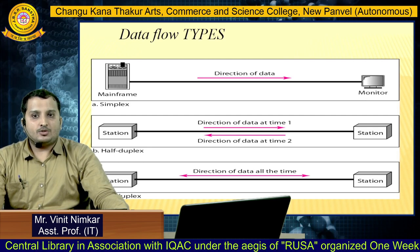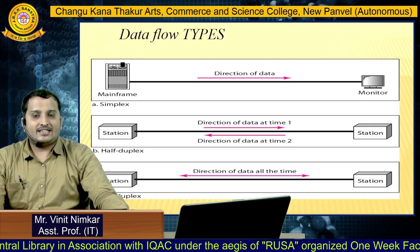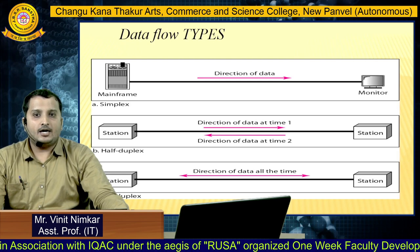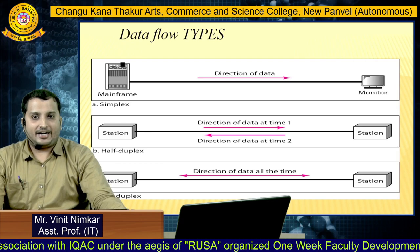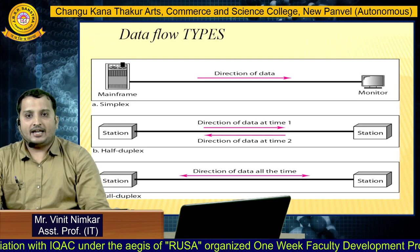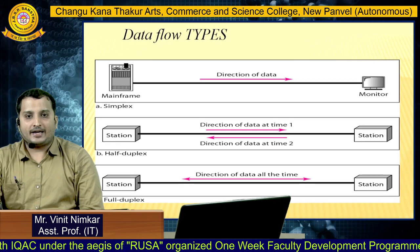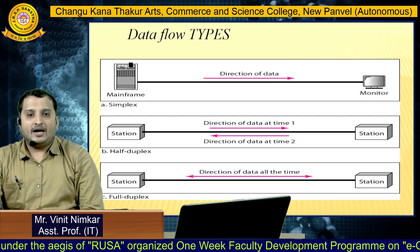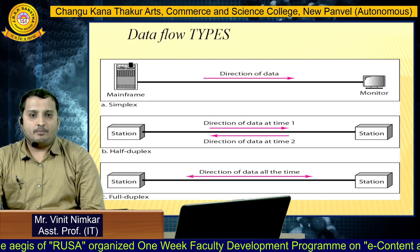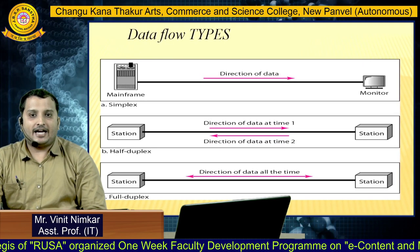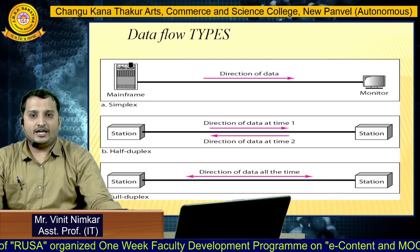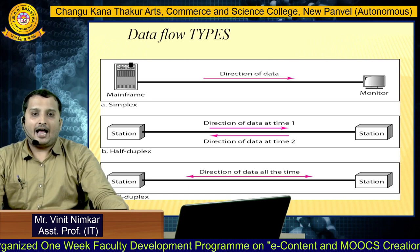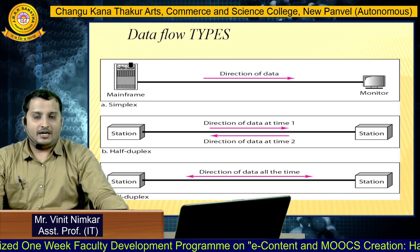In half duplex, both devices can send as well as receive data, but only one at a time. The last one is full duplex. In full duplex form, the direction of data is bi-directional, meaning both devices can send and receive data simultaneously.